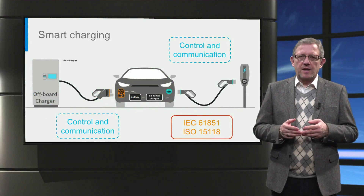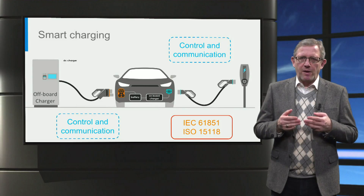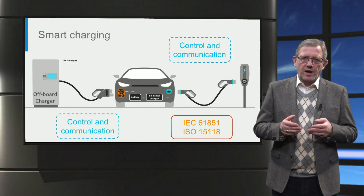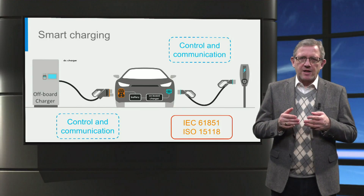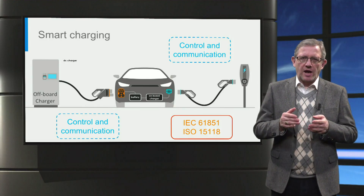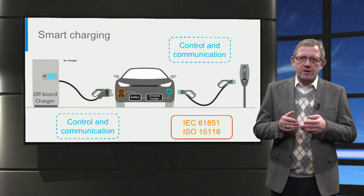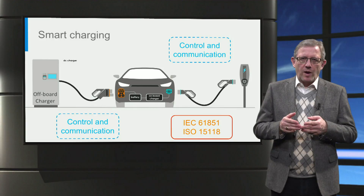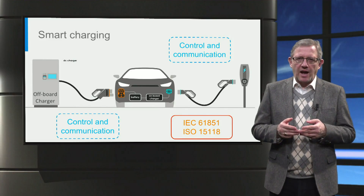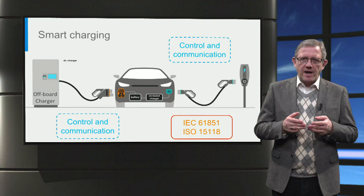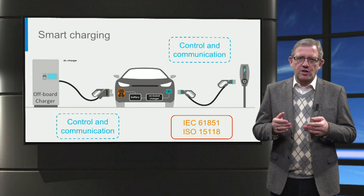Finally, let us look at how smart charging is implemented. In the case of both AC and DC charging, control and communications are established between the electric vehicle and the charging station using protocols like IEC 61851 and ISO 15118. Through this, the charging current can be continuously controlled in time and magnitude to cater to the different smart charging applications.